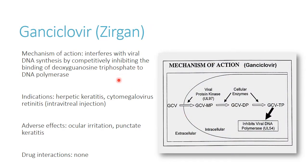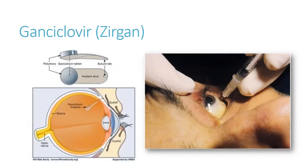Ganciclovir is typically held back for cytomegalovirus. It has a similar mechanism to acyclovir — acting as a guanine analog that gets incorporated into viral DNA. This is one where you're more likely to see it used as an intravitreal insert placed into the vitreous of the eye, allowing for nice sustained release and high drug levels that can kill off the virus, especially useful for immunocompromised patients with CMV retinitis.